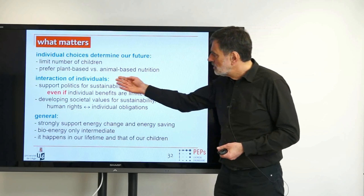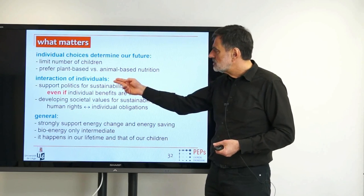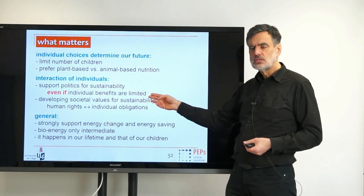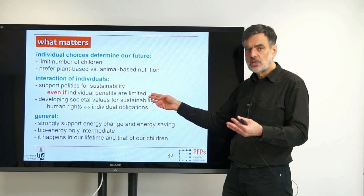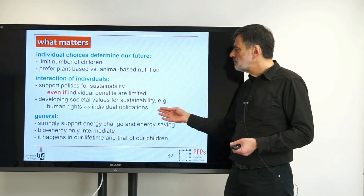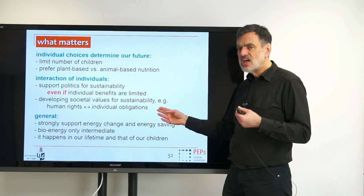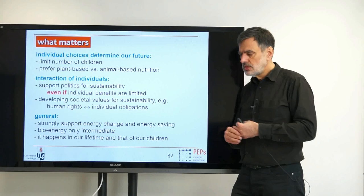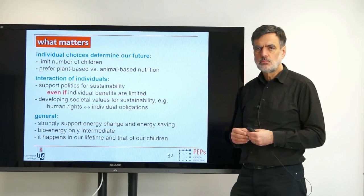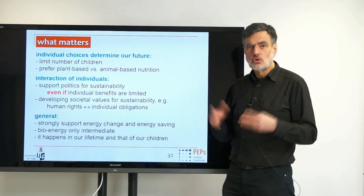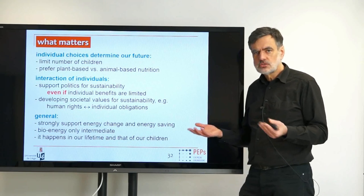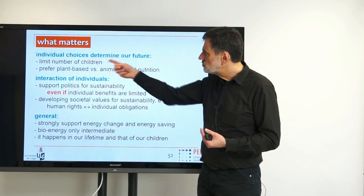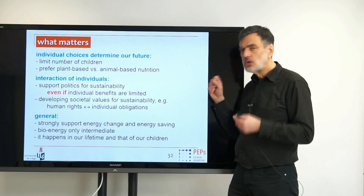Another individual choice is preferring plant-based versus animal-based nutrition — a trend already emerging in some European countries. These are individual decisions about what to eat and how many children to have, and I don't seek to limit anyone's freedom in that respect. But you should be aware that these choices have a significant influence. Also important is supporting politics for sustainability, even when individual benefits are limited — otherwise we only elect people who benefit us personally rather than global sustainability. Society needs to develop values for sustainability: currently, our values are somewhat mixed up, as when booking a weekend flight to show affection rather than choosing a more sustainable alternative.